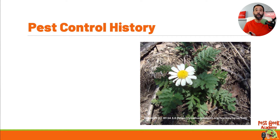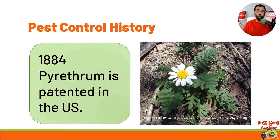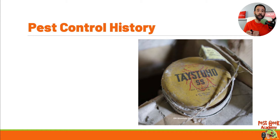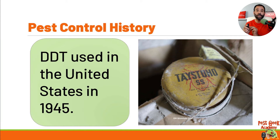More recent history involves pyrethrum, or pyrethrins, which were originally patented in the U.S. in 1884. It's still used extensively today for the control of fleas, mosquitoes, ticks, and other insects. That little flower known as the chrysanthemum flower is where we get pyrethrum from. As a pest control professional, you will encounter pyrethrum in a lot of products made today.